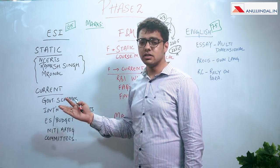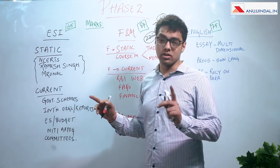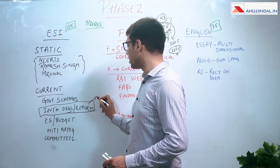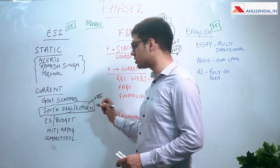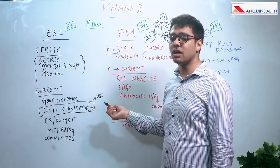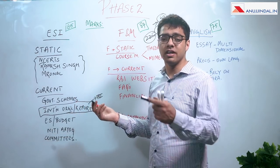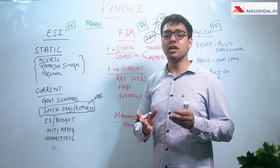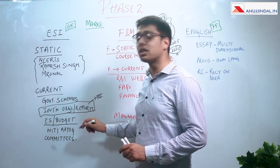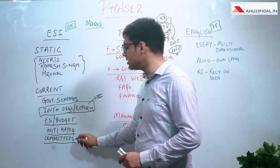Under current affairs for ESI, the focus has generally been on government schemes, international organizations and their reports. This is very important and unique to RBI — RBI reports specifically. Other papers might just ask who publishes a report or India's rank; taking a paragraph out of a report and asking questions on it is unique to RBI. Similarly, economic survey and budget are very, very important. NITI Aayog reports and other important committees are also very important.